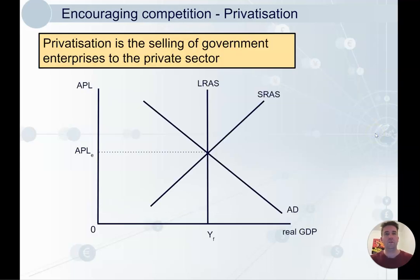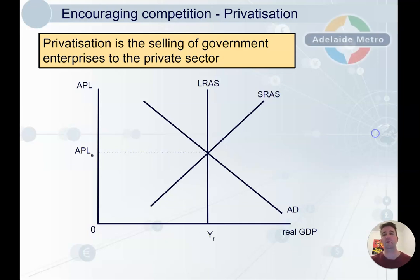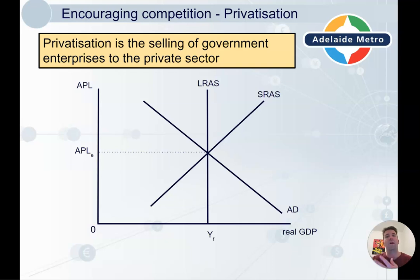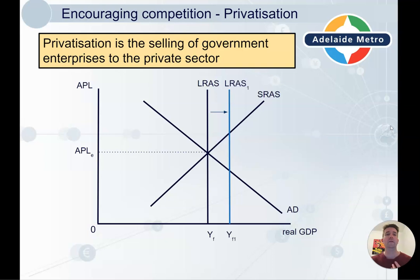One way to encourage competition is privatization. Privatization is the selling of government enterprises to the private sector. For example, letting the private sector run all the buses, trains, and trams in South Australia. Another example is when the government sold off its electricity generation to the private sector.